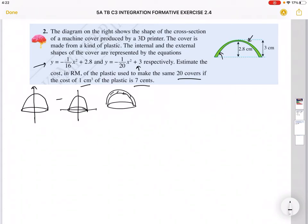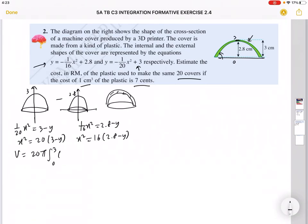From here, y equals -1/20 x² plus 3. This is the first one, the external one. It's the bigger one, with -1/20 x² plus 3. So I rearrange it: 1/20 x² is now 3 minus y, so x² is 20(3 - y). The second one is 1/16 x² equals 2.8 minus y, so x² is 16(2.8 - y). So your volume will be—remember to put a π—I'm going to take out the 20 straightaway. It's from 0 to 3. As you can see, the first one is higher. It's from 0 here to 3 here. The second one is 16π integrate from 0 to 2.8 of (2.8 - y) dy.